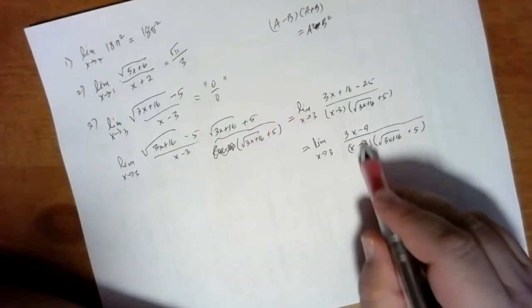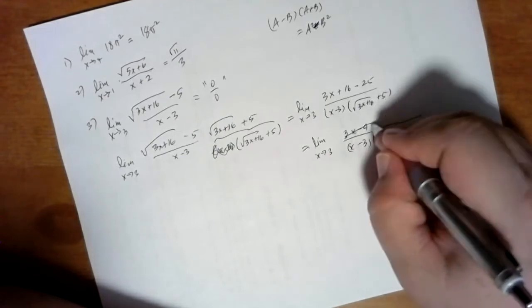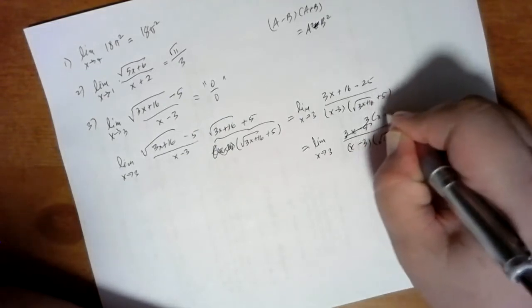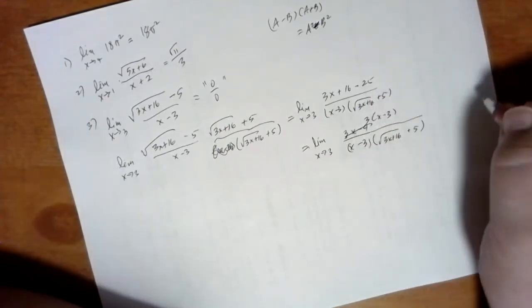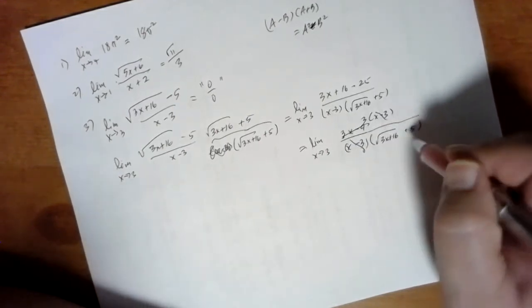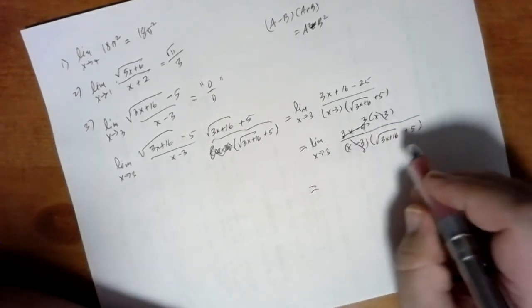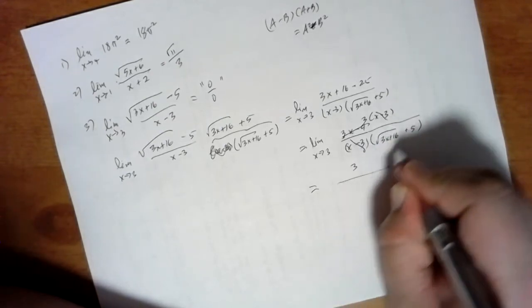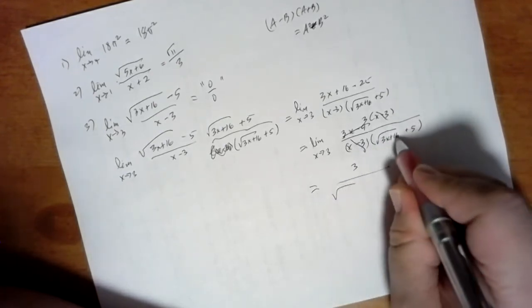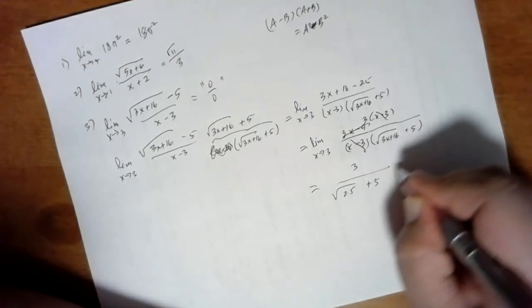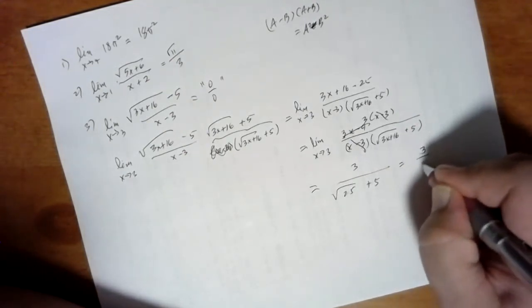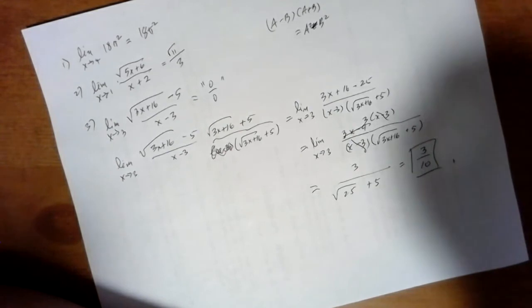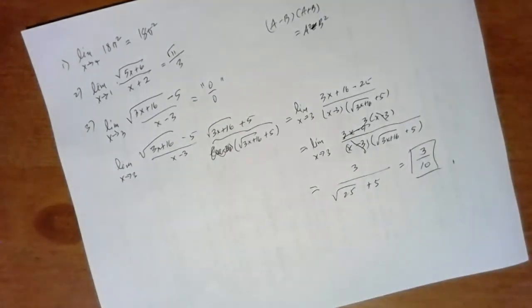Do you see what we're going to do? Factor the 3 out of the top. Cancel the x minus 3's. Yay! And we're done. We have 3 divided by the square root of 16 plus 9 is 25 plus 5 is 3 over 10. Good. All right.